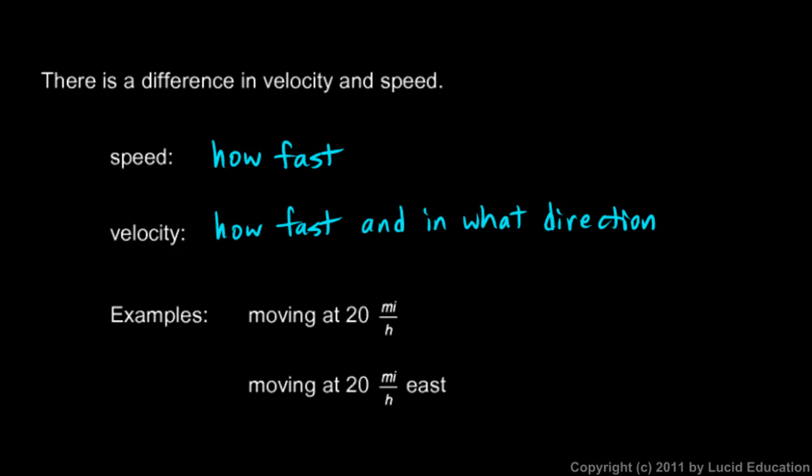A directional quantity. So if you say something is moving at 20 miles per hour, you're talking about the object's speed. If you say it's moving at 20 miles per hour east, or indicate some kind of direction there, you're talking about the object's velocity.